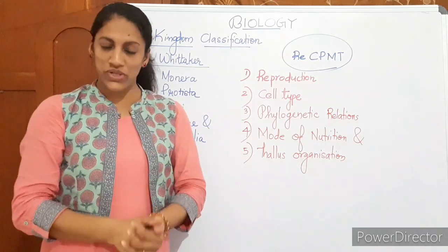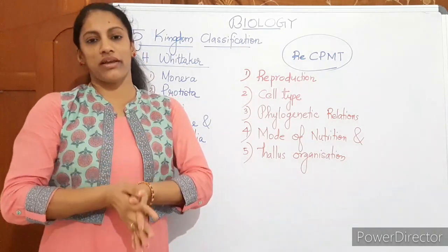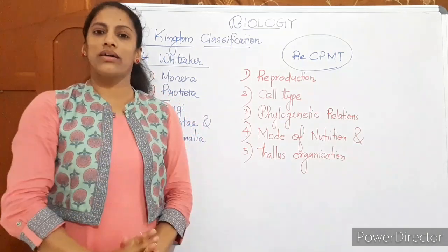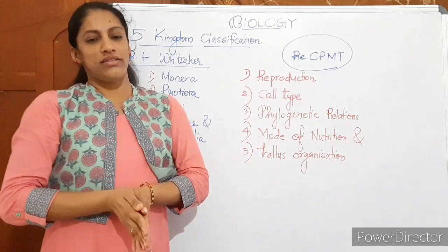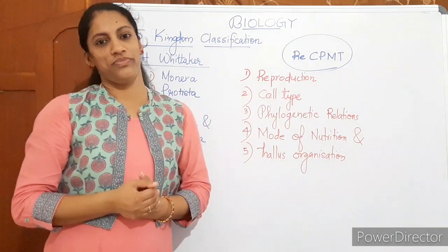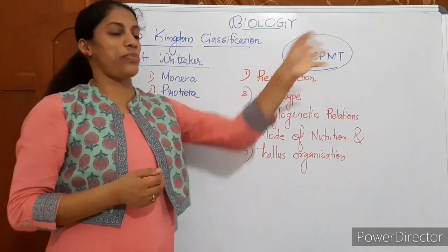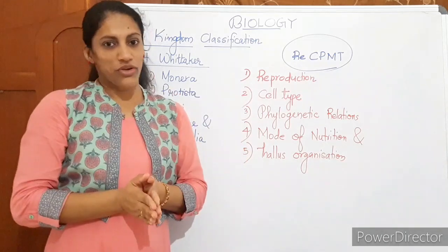Here you can see the chord: Re-CPMT. Re stands for reproduction. C for cell type. P for phylogenetic relation. M for mode of nutrition. T for thallus organization. Usually, even in the entrance question options, it is there. Which one among this is not a characteristic taken into account by R.H. Whittaker? Such questions may be there. You have to learn this. Not need to by heart it. Just develop a chord word. This is enough. Re-CPMT. Just expand it and study. It will be easy for you.